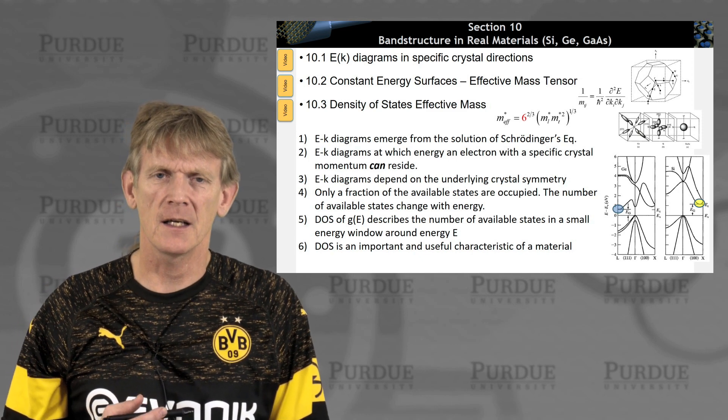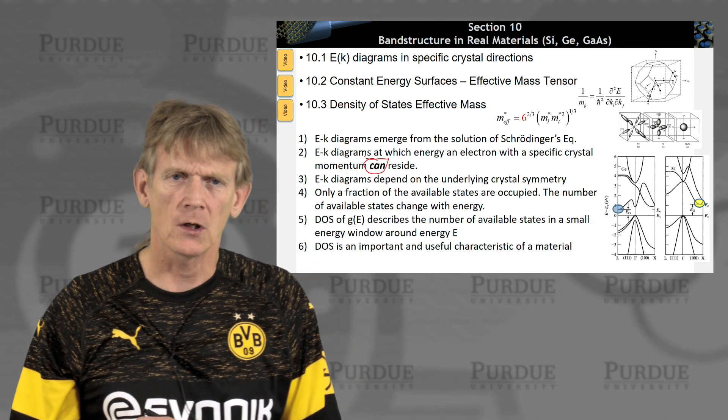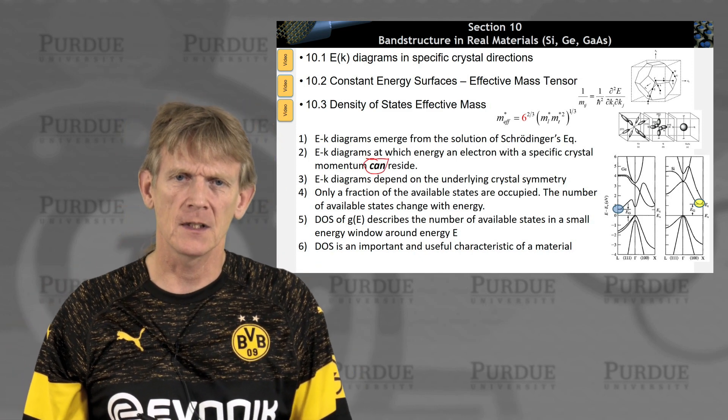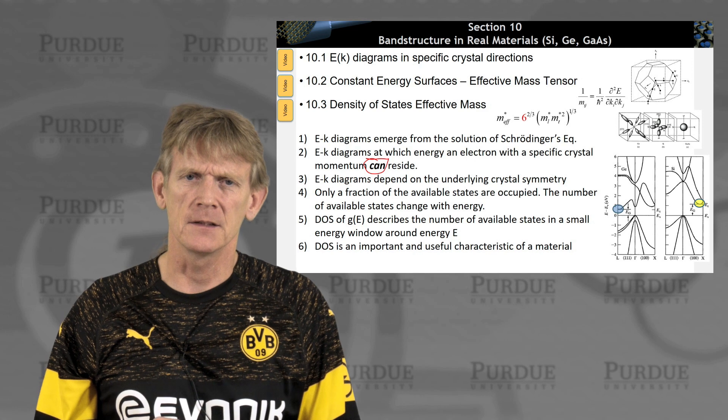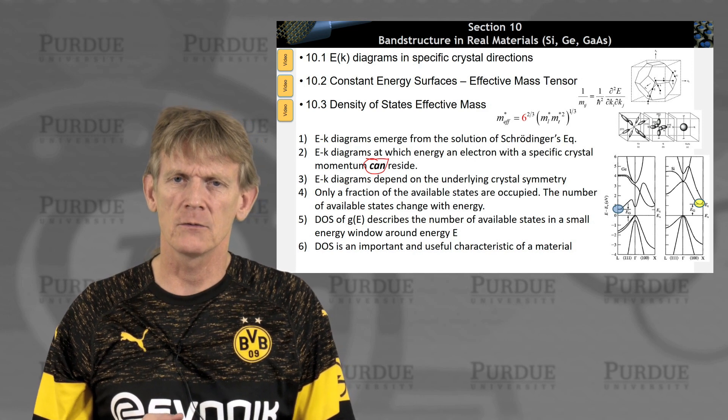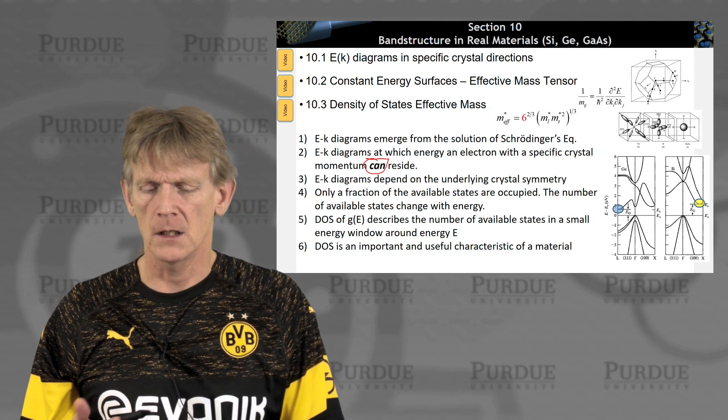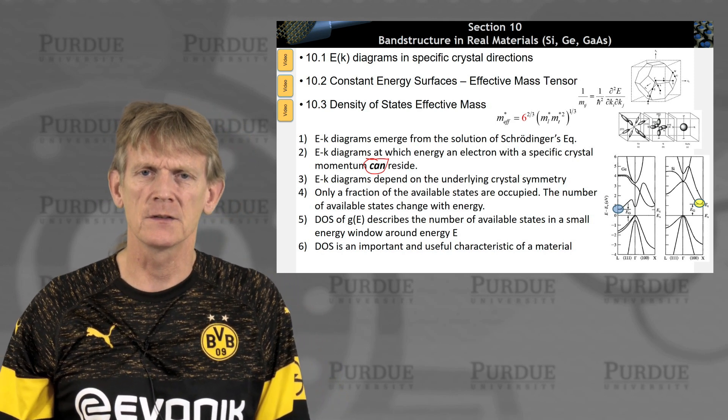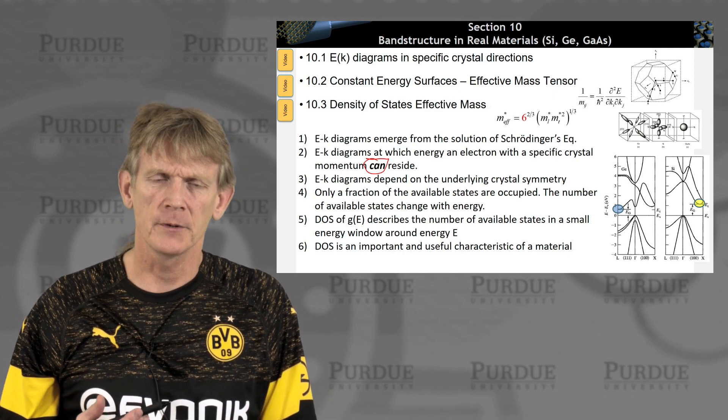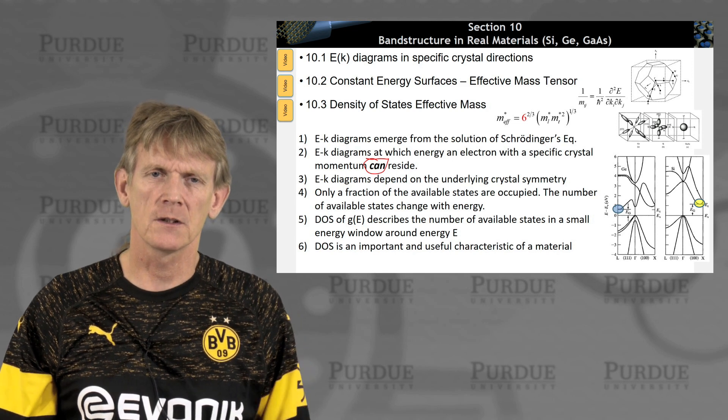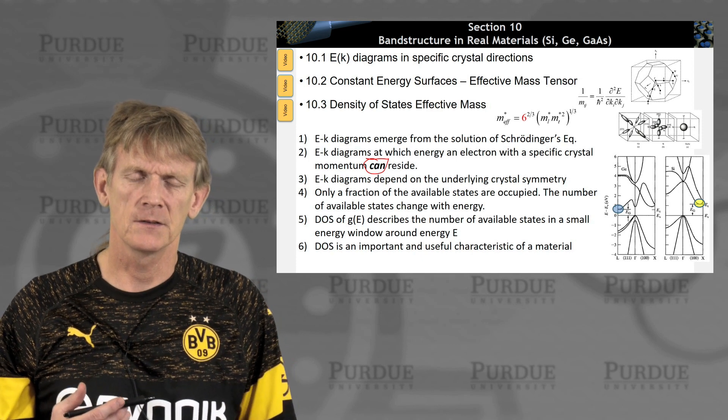These EK diagrams indicate where states, electrons, can be. We haven't talked much about the occupation of those states. And I did spend a lot of time trying to elucidate that these EK diagrams really are reflective of the underlying crystal symmetry. We have a feeling that only a few of these states are occupied. And as we calculate the occupancy of these states, it's very useful to consider a property called density of states.